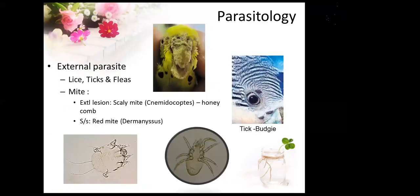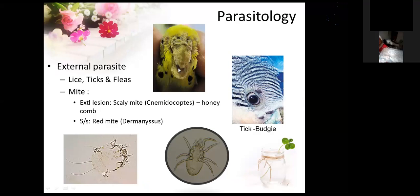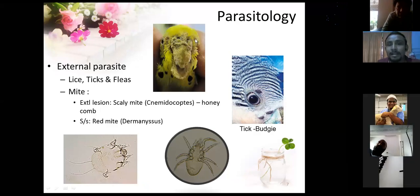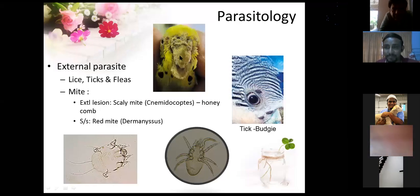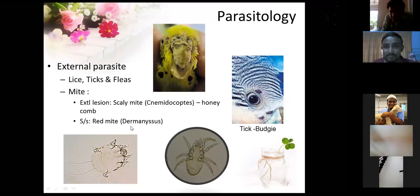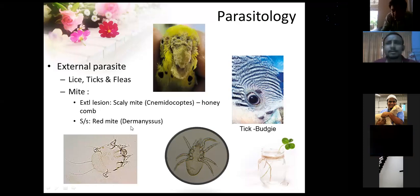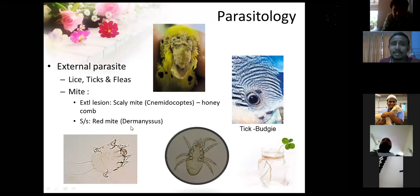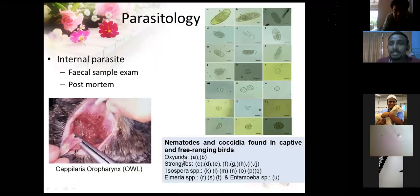Birds have external and internal parasites. They can have lice, ticks — you can see a tick on a budgie's face. There is also scaly mite infection, which shows a typical honeycomb-like pattern on the face and beak. You can take skin scrapings, just like in dogs and cats, to analyze for red mites. This is a picture of a red mite.